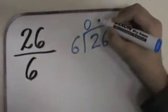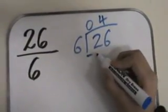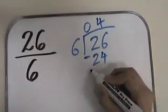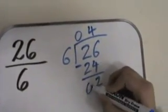6 can go into 26 4 times. 4 times 6 equals 24. So we put 24 down here and we would subtract it with 26. 6 subtract 4 equals 2 and 2 subtract 2 equals 0.